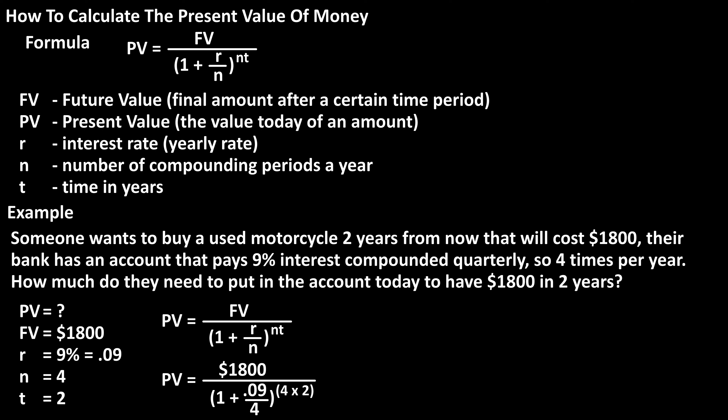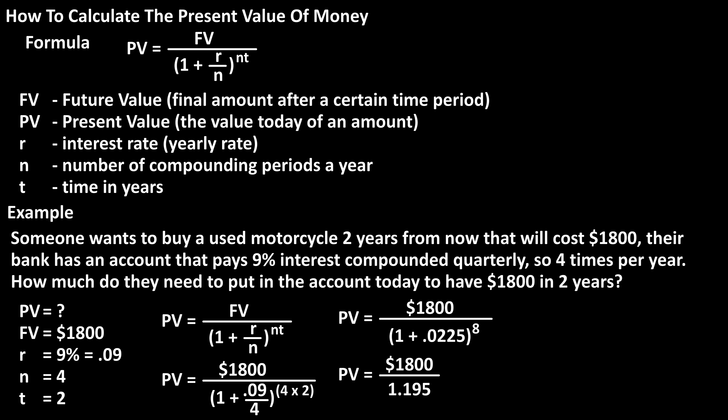That quantity is raised to 4 — again the number of compounding periods per year — times 2, the number of years. Here are all the calculations written out on the screen. In the end, we get $1,506.49 rounded off. So this basically means that in today's dollars, $1,800 is worth $1,506.49.